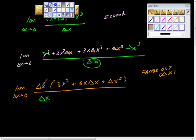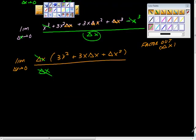Now look what's going to happen. Now change of x can go to zero. And we have the limit as the change of x goes to zero of 3x squared plus 3x change in x plus change in x squared.